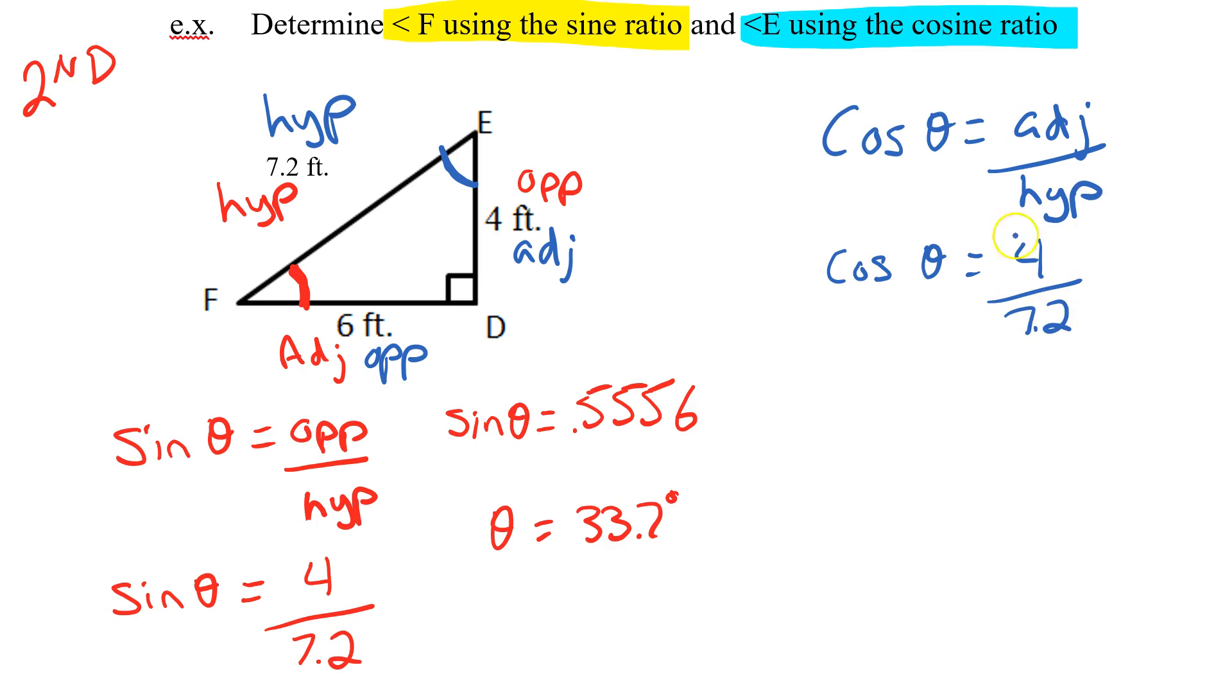Now I've seen this fraction before right it's right down here so I know 4 divided by 7.2 is 0.5556. So cos of the angle equals 0.5556.